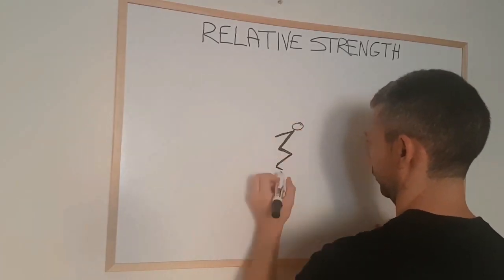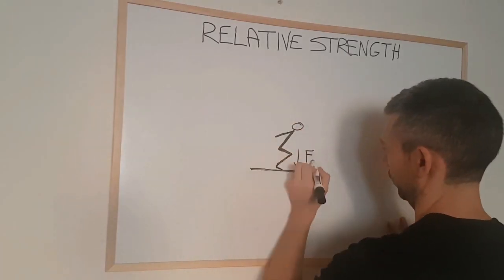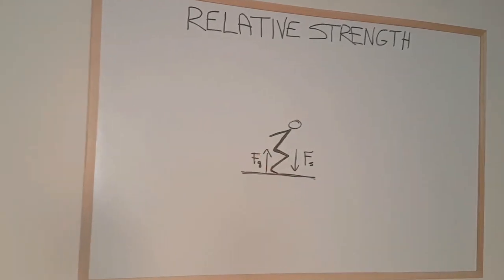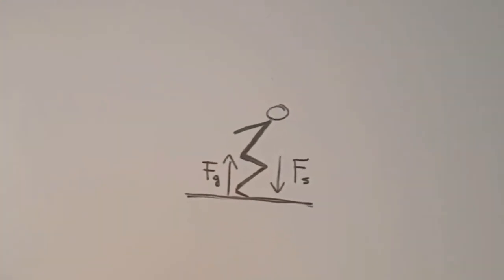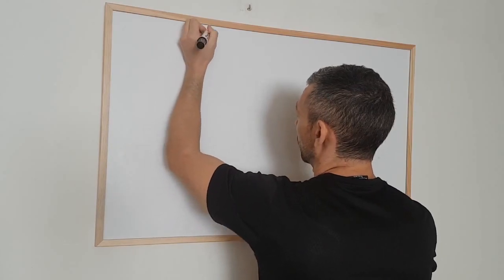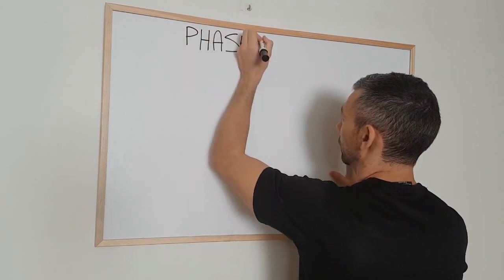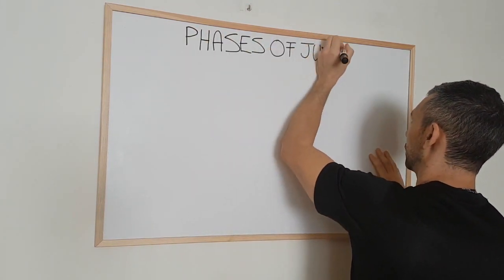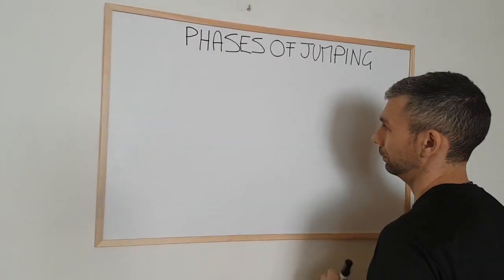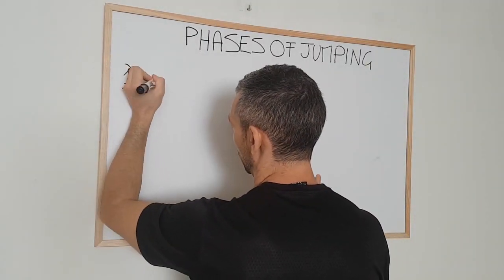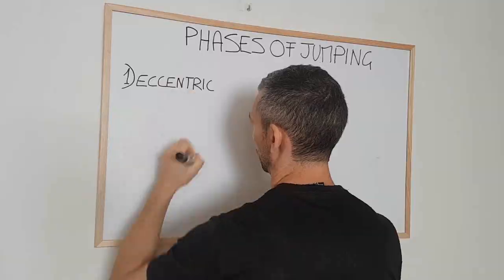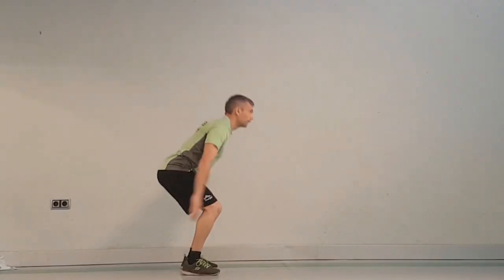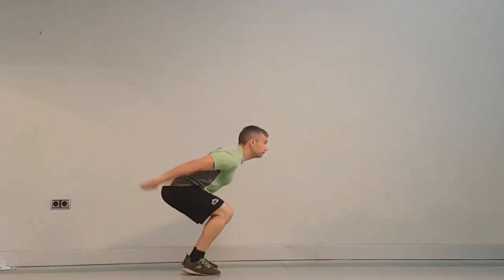The ground will generate a force equal to the force you exert on it but going in the opposite direction — in this case, up. To improve strength specifically for the vertical jump, if we look at the biomechanics of jumping we can distinguish three phases. In the first phase, also called the eccentric phase, as the body lowers down to a half squat position, the muscles and tendons in the quads and calves extend and in doing so they store elastic energy.